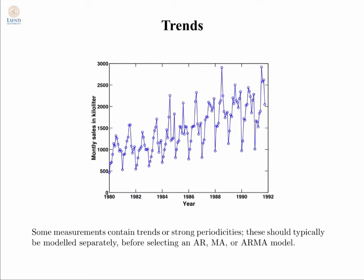Here is an example of data that is in need of both a transform and a trend removal. This is the amount of wine sold in Australia in kilolitres over a couple of years. You can see there is a trend — a growing amount of wine being sold every year — but also the amount of variability in the data seems to grow every year. That is typically why you would want to introduce a transformation, to get this variability to be stable over time. So we would first like to make the data stable and make the trend go away before we proceed to selecting a model.